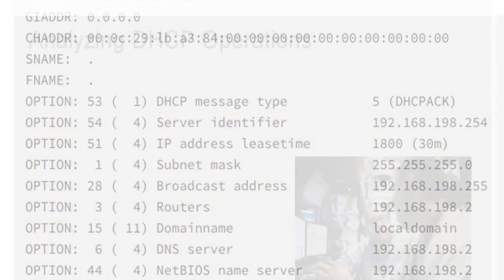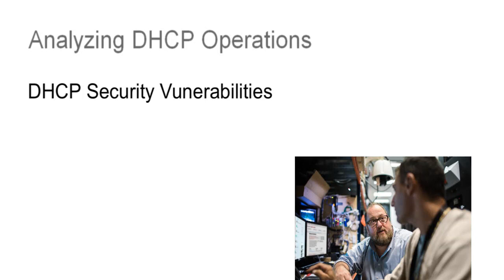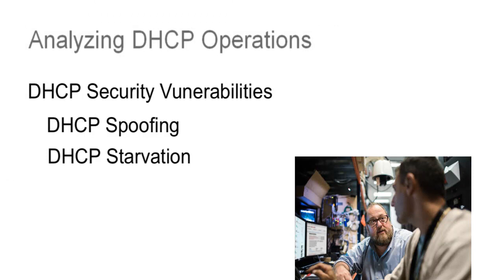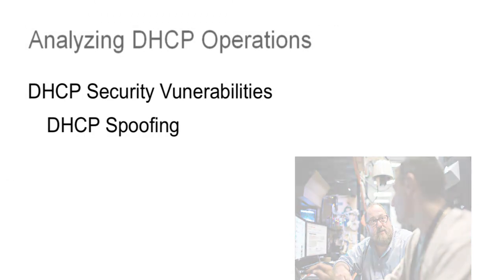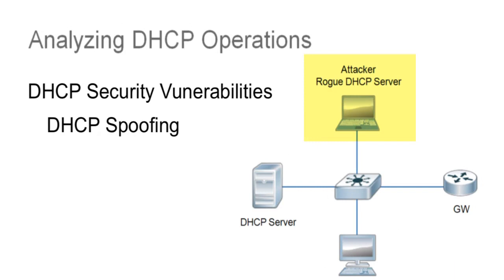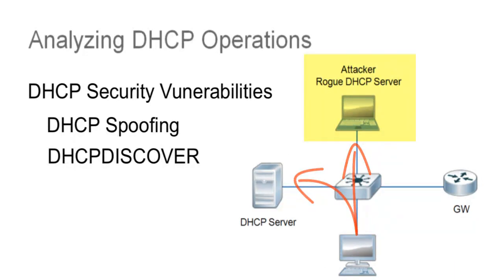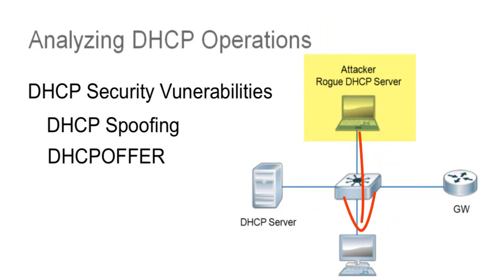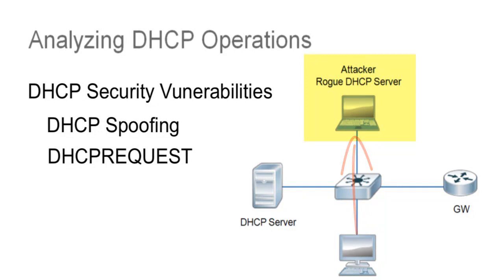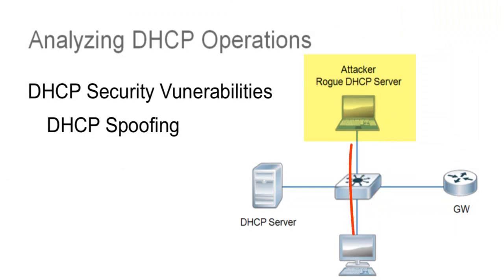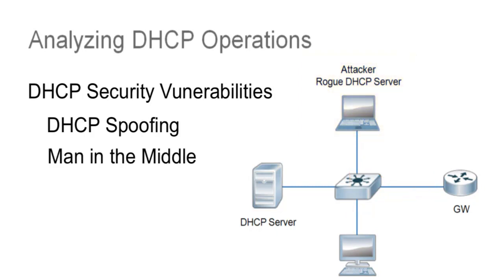Now that we have a better idea of how DHCP works, we need to understand some DHCP security vulnerabilities. These include DHCP spoofing and DHCP starvation. In the case of DHCP spoofing, the attacker inserts a rogue DHCP server into a network. When a client sends out a DHCP discovery packet, the rogue DHCP server responds with a DHCP offer packet before a valid server can. The rogue server then hands out an invalid IP address and designates itself as the default gateway for the unsuspecting client. All traffic from the client is then directed to the rogue server, which allows the attacker to sniff the packets before forwarding them on to the real destination. This is sometimes referred to as a man-in-the-middle attack.